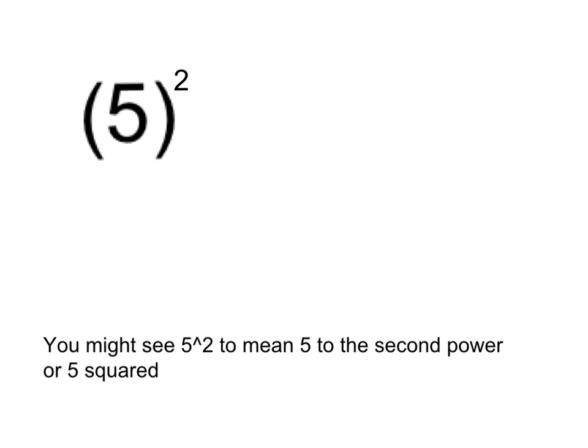So here we have 5 to the power of 2, or 5 to the second power. If you're using the second power, we'll often just say squared. So this is 5 squared. And what that means is 5 times itself 2 times, or 5 times 5. 5 squared is just 25.